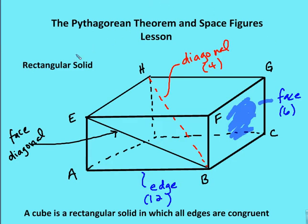Let's talk about a rectangular solid. A rectangular solid is a three-dimensional figure. I have four sides around the rectangular solid and then two bases on the top and the bottom — these are faces of the rectangular solid. A diagonal goes from one corner of the rectangular solid all the way to the opposite corner across the rectangular solid — so from H to B. I also have a diagonal from E to C, from G to A, and from the unlabeled point to F.